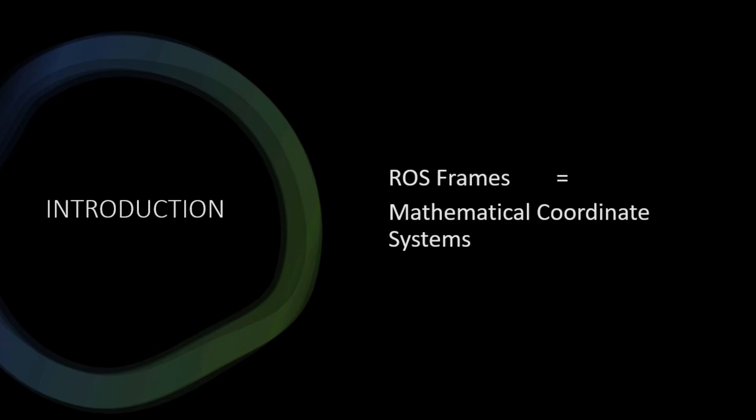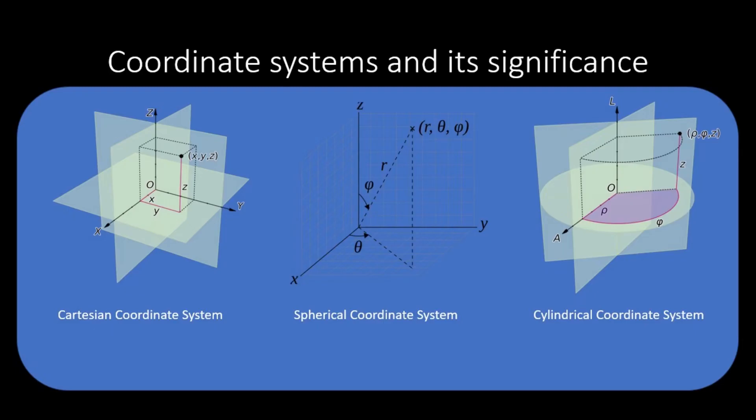Coordinate Systems and its Significance in Mathematics. ROS frames are called coordinate systems in mathematical context. In any mathematical problem where we need to identify the positions or orientation of multiple geometrical objects of interest, we need to define a reference system.